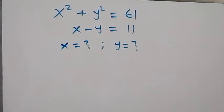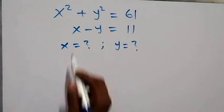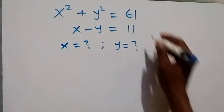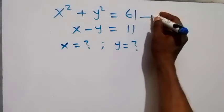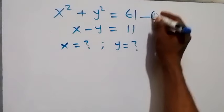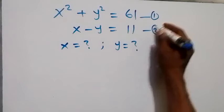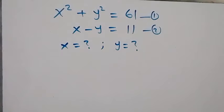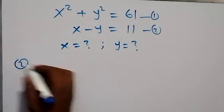Hello, you are welcome. How to solve these nice systems of equations: we have x squared plus y squared equals 61, and x minus y equals 11. Let's label this as equation one and this as equation two. Here we are finding the value of x and y.